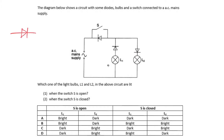A quick revision on the diode: when current flows in the forward direction, this is forward bias — the resistance of the diode is very low and current can flow through easily. When current tries to flow in the opposite direction, this is reverse bias — the resistance will be very high and basically no current will be able to pass through.